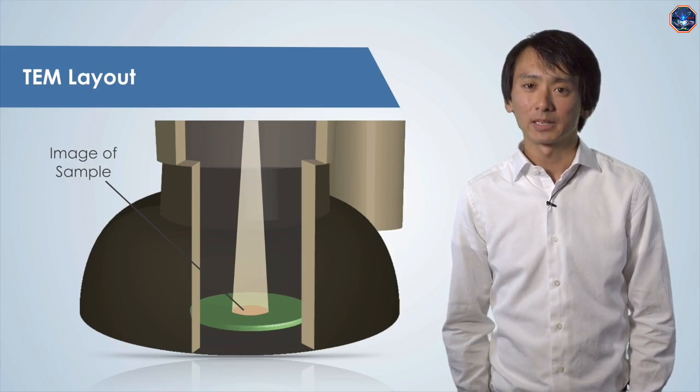Though TEM enables atomic scale resolution, it does have its drawbacks, which are important to note. The TEM is a two-dimensional projection of a three-dimensional sample. Thus, artifacts may be produced. It is often difficult to distinguish what is real from what is an artifact.